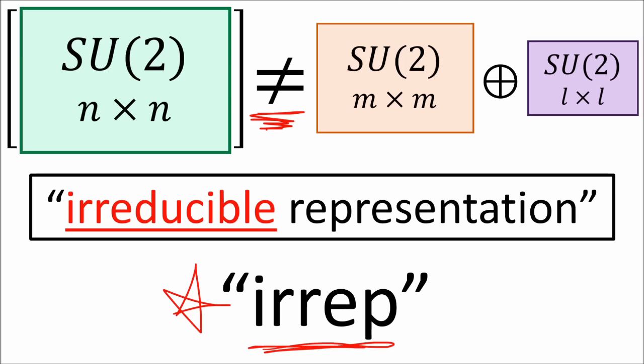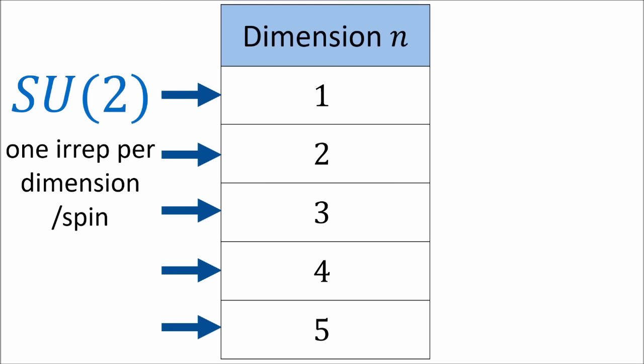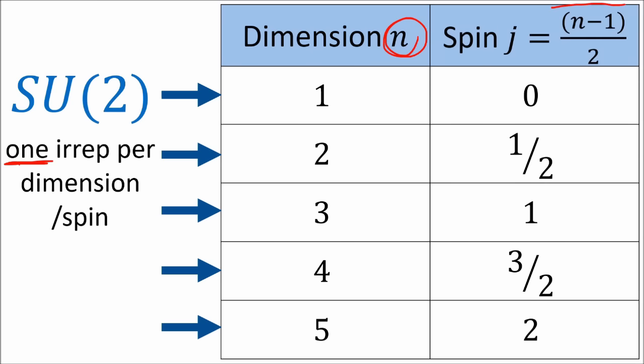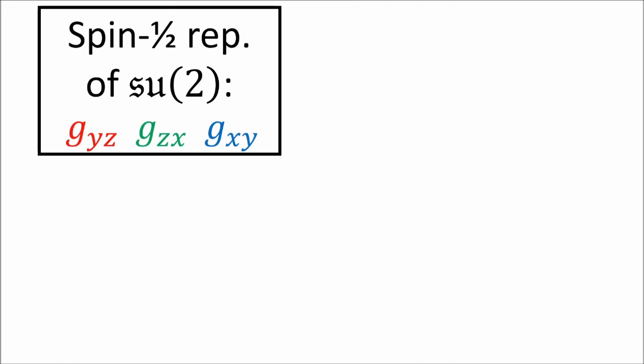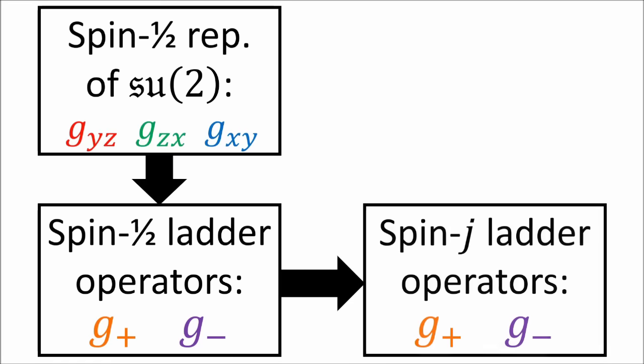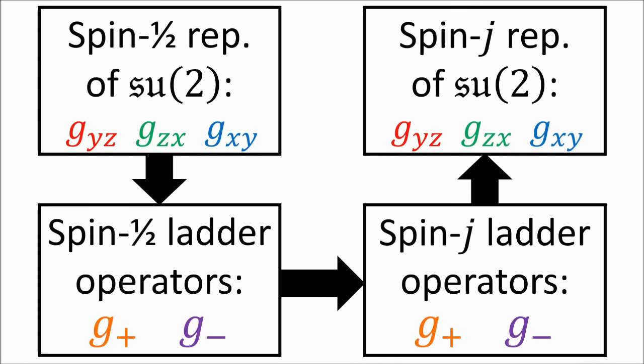When we construct a representation using smaller representations with the direct sum to give a matrix in block diagonal form, we call this representation reducible. If a representation cannot be written as a direct sum, we call it an irreducible representation, or IRREP. In this video, we're interested in finding irreducible representations. For the SU2 group, there is exactly one unique representation for a given matrix size. We can label these representations by the dimension n, or equivalently by the spin value, which is the dimension minus 1 divided by 2.